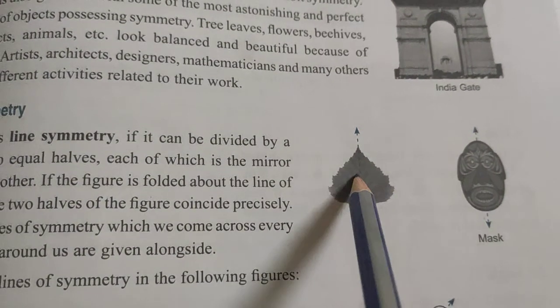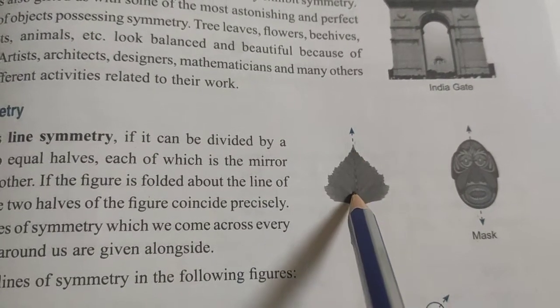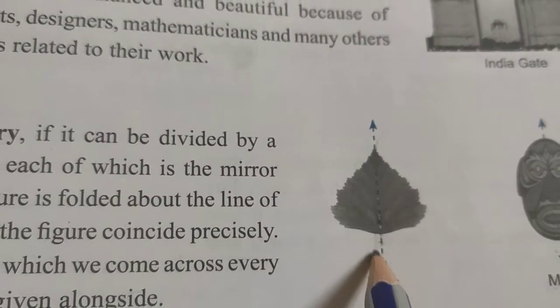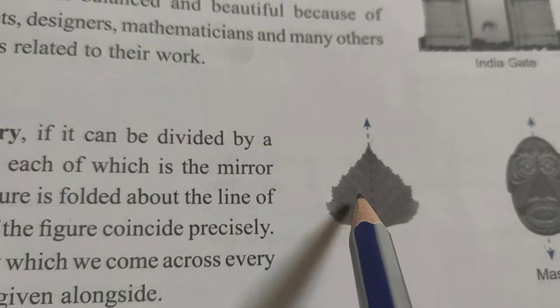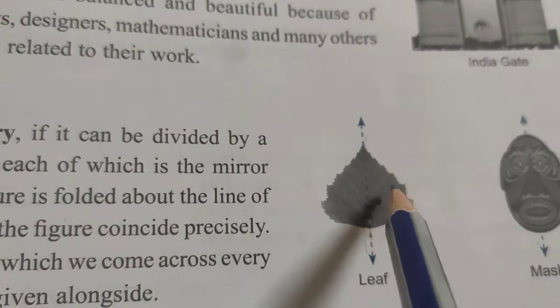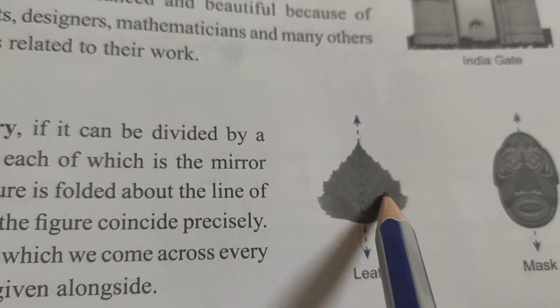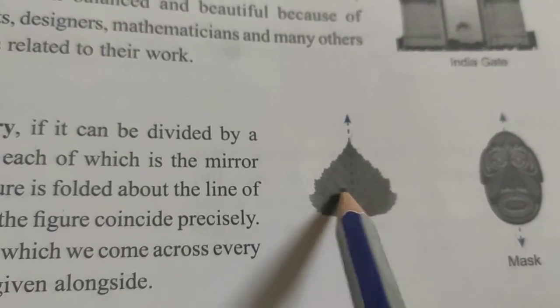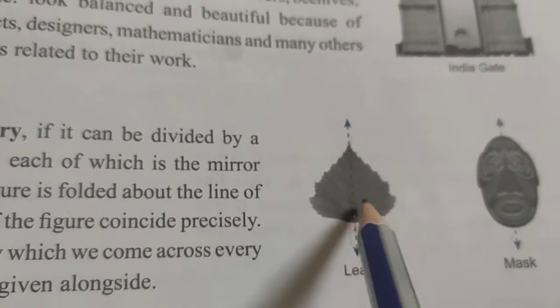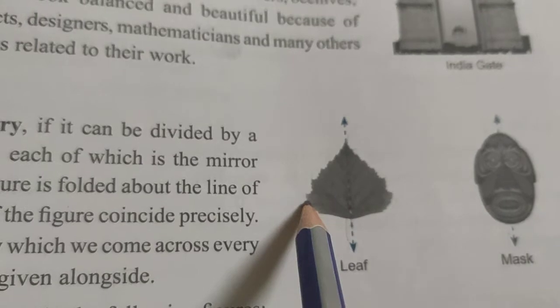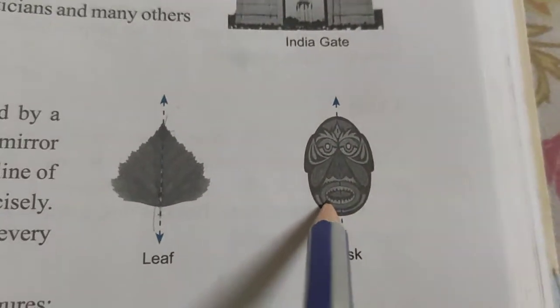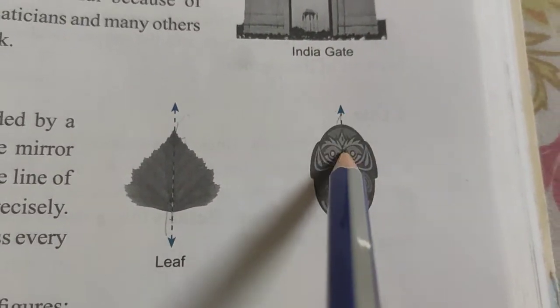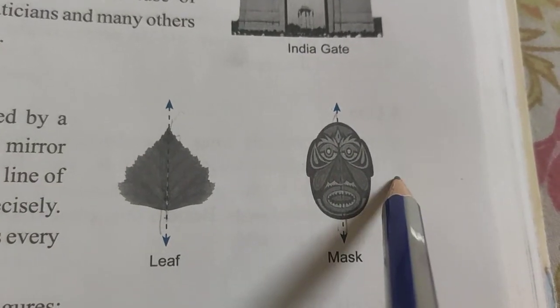A line of symmetry is a line where, if that part is folded in half, or if a mirror is placed on this line, you will get the image of the other half. If you keep a mirror here, you will see the reflection of the other half, giving a virtual image of a single leaf. Similarly for the mask, the mirror shows the other part as a reflection.